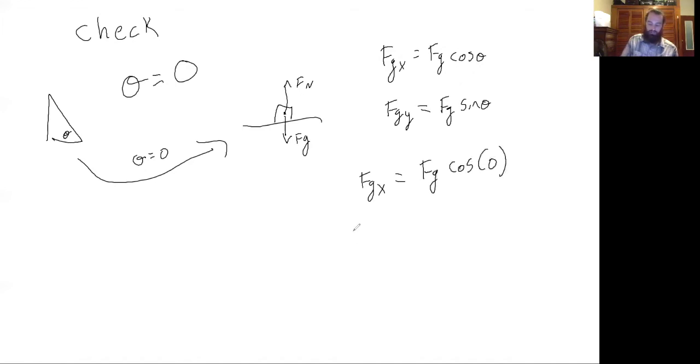and fg sine of zero. From trig, we know that cosine of zero equals one, so this just goes to fg. Sine of zero is zero, so this goes to zero.